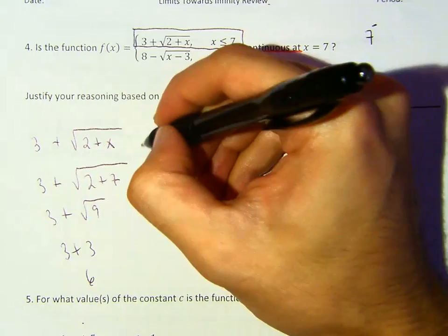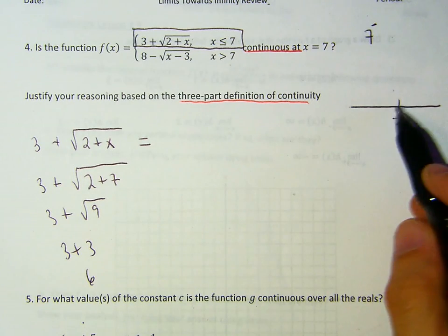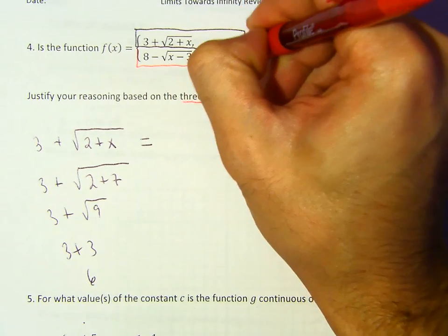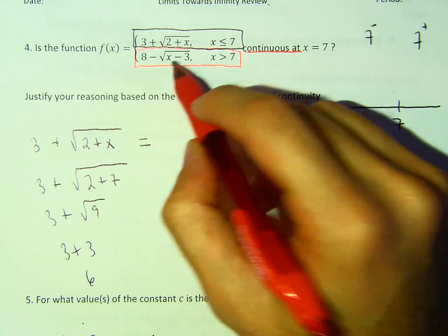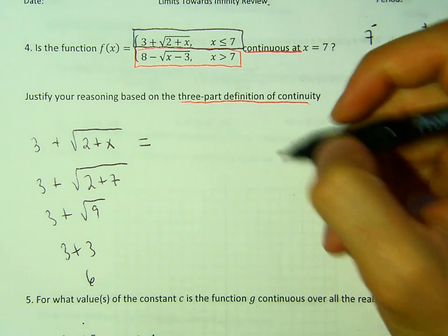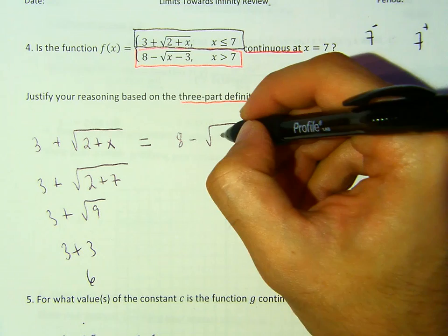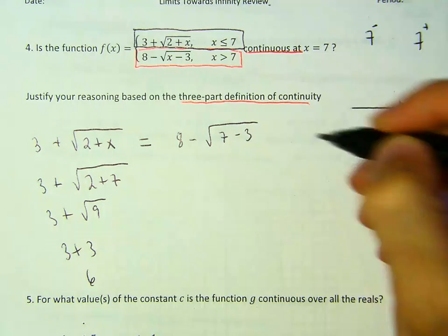So now we have to see if it's equal to the right side. So what about 7 from the right? Notice we're going to use this equation over here, right? So what I want you to do is plug in 7 into this and see what we get.